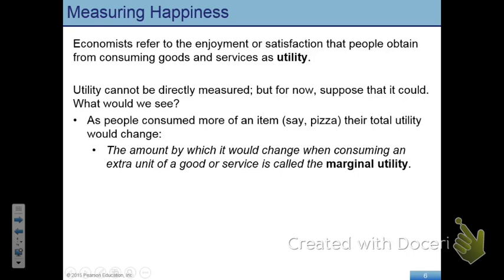This idea was coined by Marshall about 200 years ago. He said that the util should be a unit of measuring satisfaction — just like you measure distance, you should be able to use the util to measure your satisfaction. With that, we can now formalize a way to understand how a consumer makes his or her purchasing decisions.